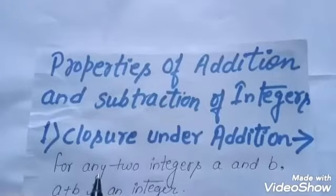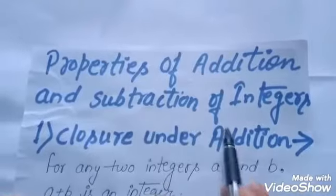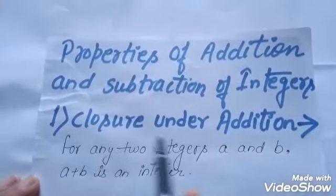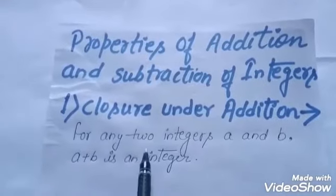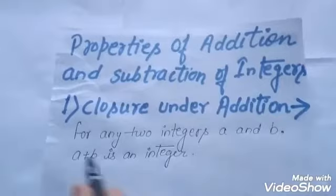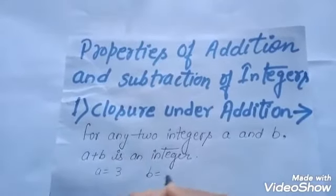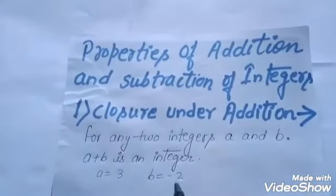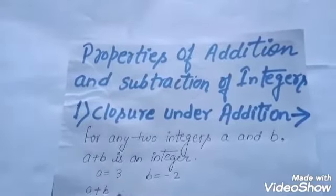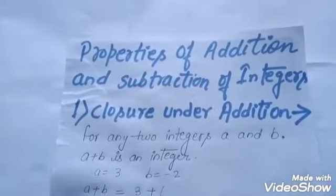My next topic is properties of addition and subtraction of integers. The first property is closure under addition. For any two integers a and b, a plus b is an integer. If a equals three and b equals minus two, then three and minus two are integers, and we find a plus b: three plus minus two.